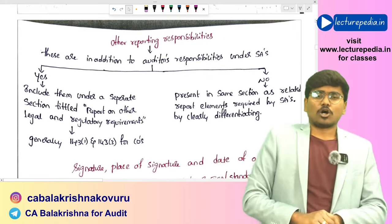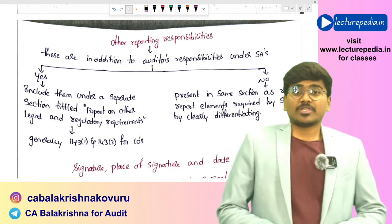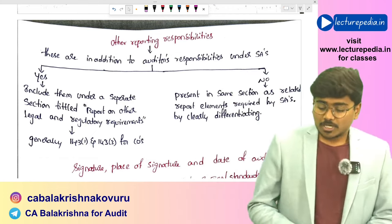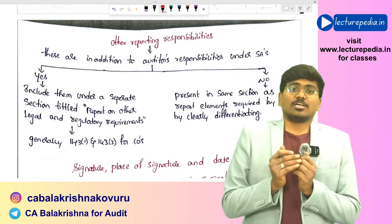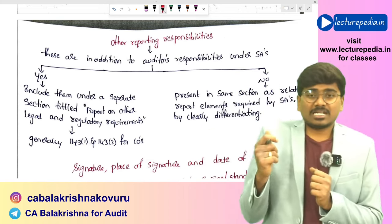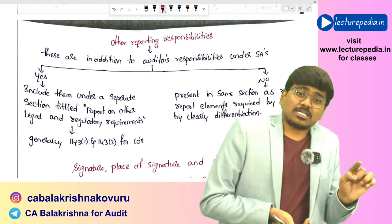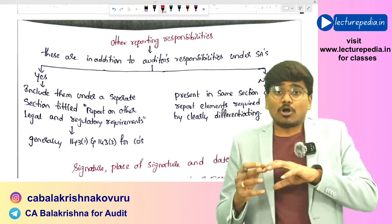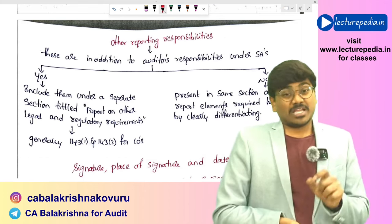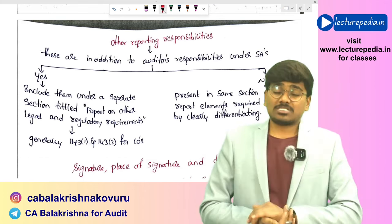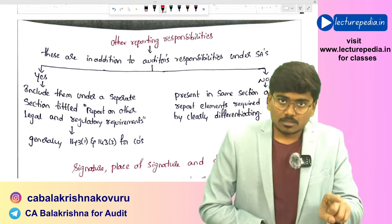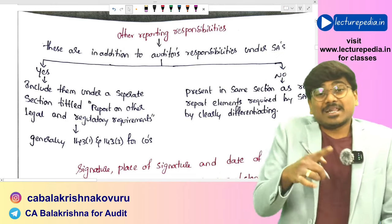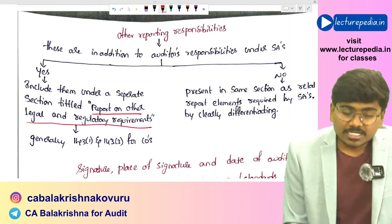Once the auditor's responsibility paragraph is done, there will be reporting responsibilities under other legal and regulatory requirements. You need to check whether the reporting requirements under those other laws and regulations are in addition to the requirements present in Standards on Auditing, or whether they relate to the same aspects. If those reporting requirements are in addition, you must include them under a separate section titled 'Report on Other Legal and Regulatory Requirements.'